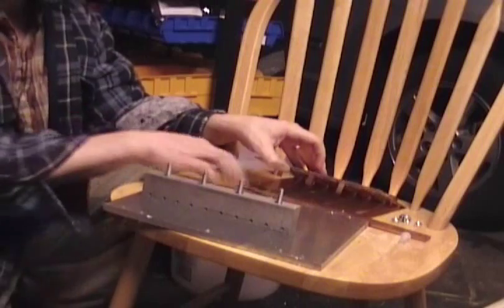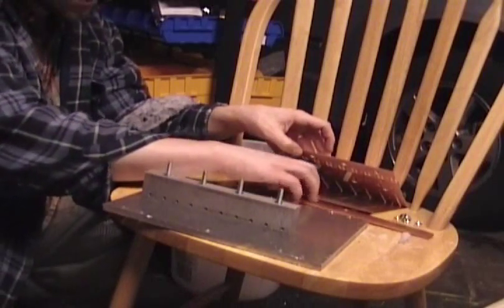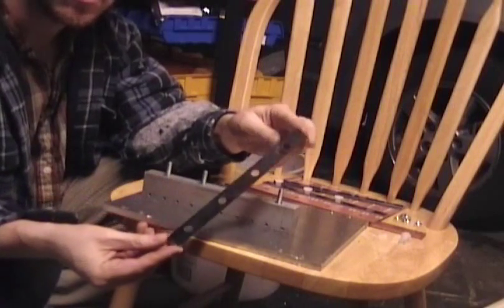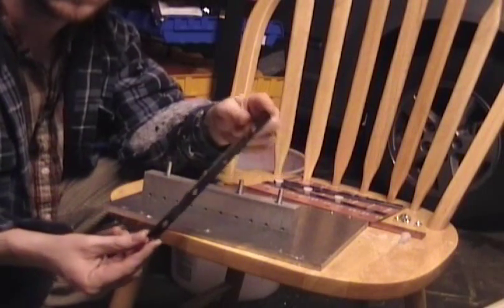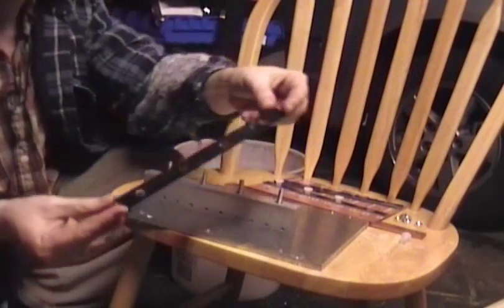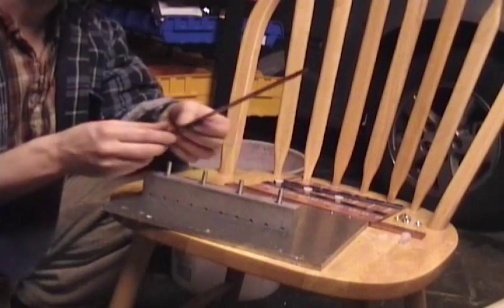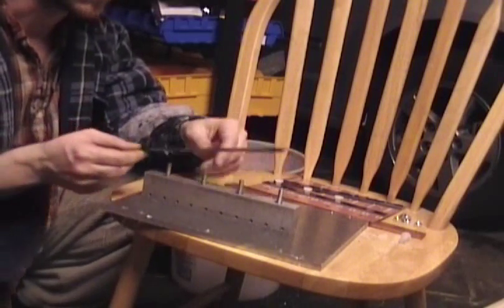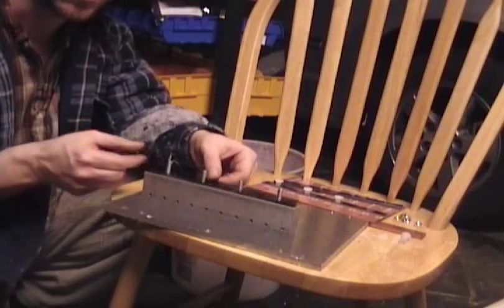Next is a little isolation strip PC board on that FR4 material. It's about a sixteenth of an inch thick. That goes on next because we want the heat spreader isolated from the power board.